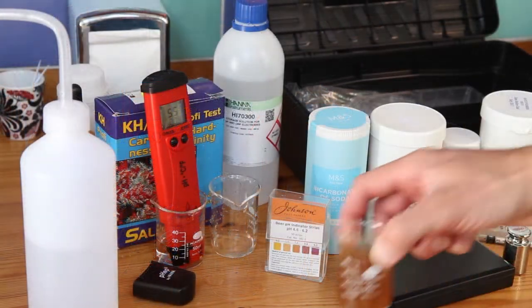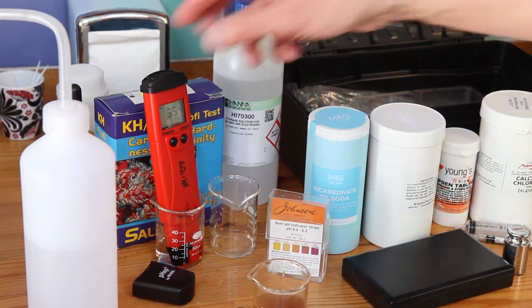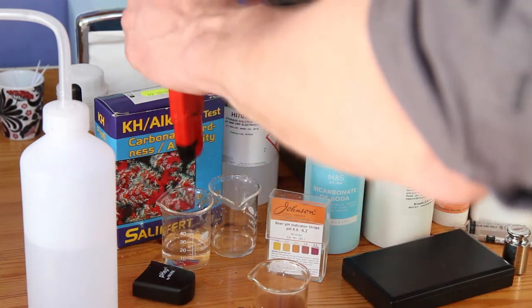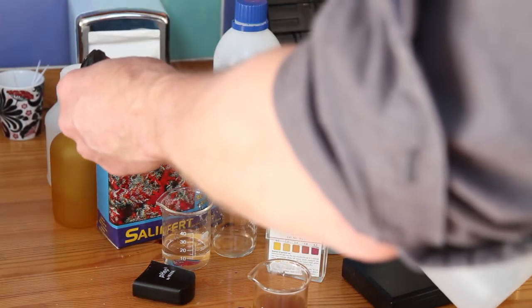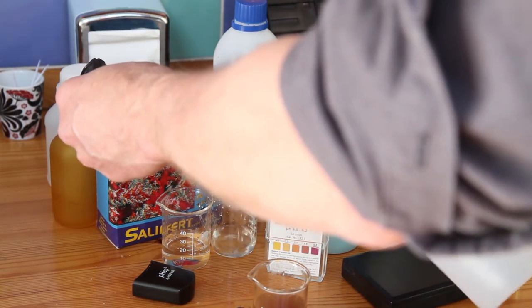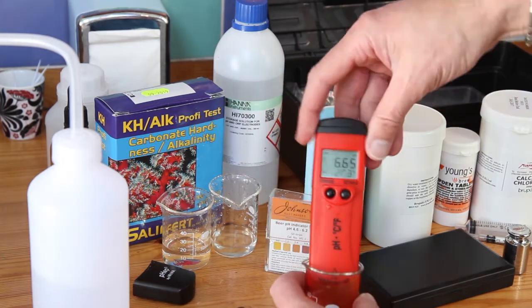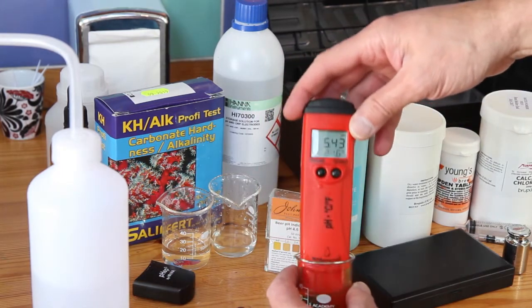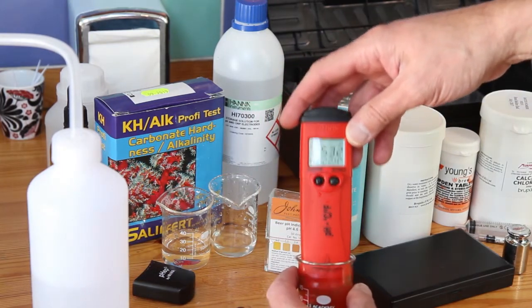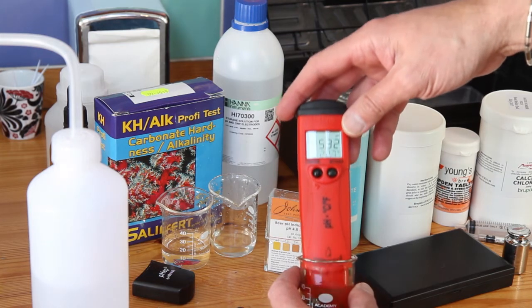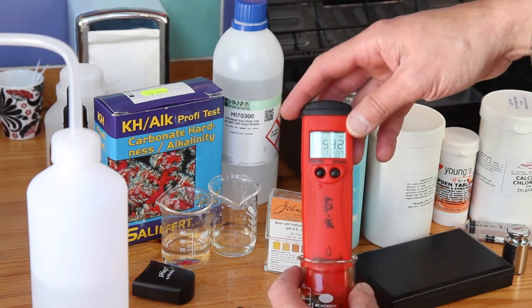So in a few minutes I will be testing the mash pH for the first time. Okay, I have taken my sample of water at 10 minutes. So let's have a look. Brewing water predicted the mash pH of 5.31. Let's put it in. Give it a swish around.